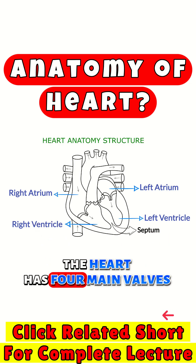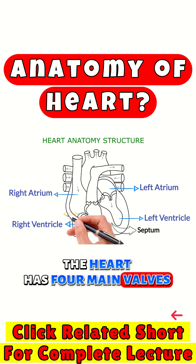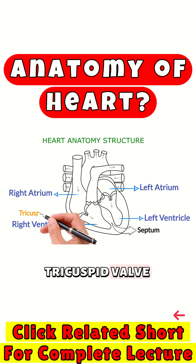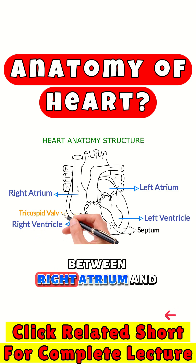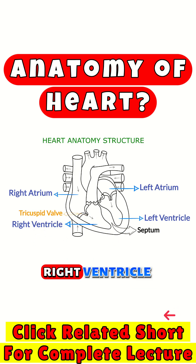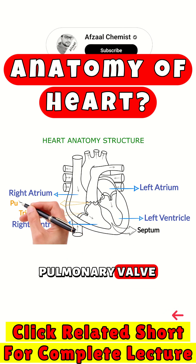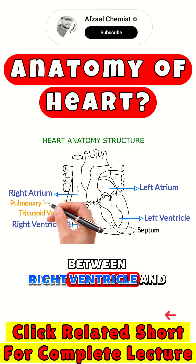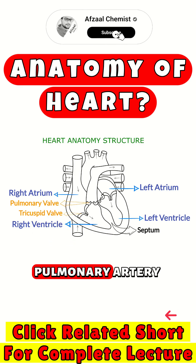The heart has four main valves. The tricuspid valve is between the right atrium and right ventricle. The pulmonary valve is between the right ventricle and pulmonary artery.